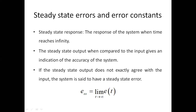Steady state error means that once the response of the system has entered into the steady state part, that means it has settled on a particular desired output. At that point, what is the error — the deviation between the actual output and the desired output. For example, if the desired output was 5 volts but the system settles at 4.8, then there is a steady state error of 0.2, since 5 minus 4.8 gives 0.2. This is what we call steady state error.